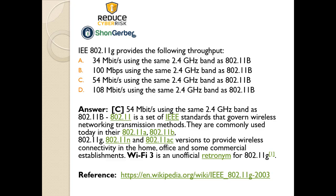So again, 802.11g — how much throughput does it give you? 34 megabits per second, 100 megabits per second, 54 megabits per second, or 108 using the same frequency of 2.4 gigahertz? The answer is C: 54 megabits per second using the same 2.4 gigahertz band. 802.11 is a set of IEEE standards that governs wireless network transmission methods, commonly used today in all of these different versions.